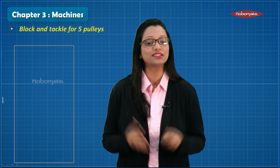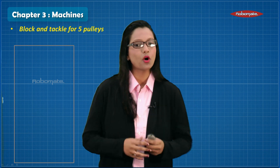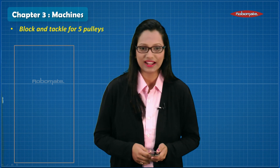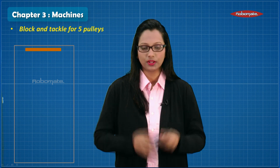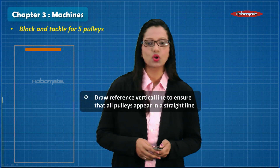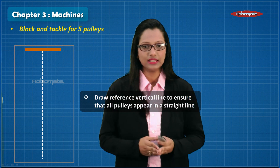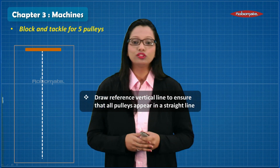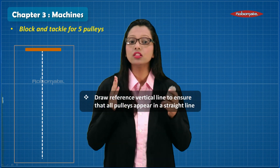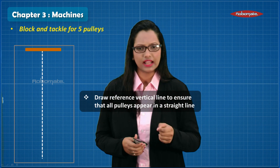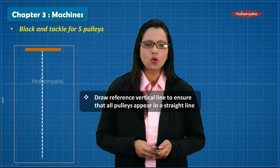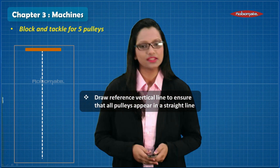Moving on to the most important and commonly asked question from Machines — the block and tackle. A few important tips for drawing this diagram: first, draw the rigid support and do not forget to draw a vertical reference line till the end of the page so that all the pulleys appear in a straight line. This line has to be very light and should not be visible once the complete diagram is done.